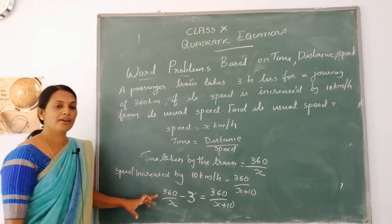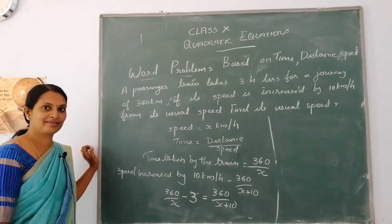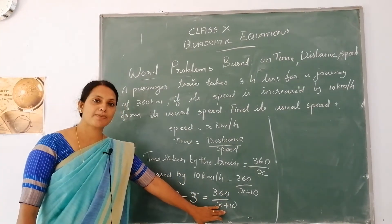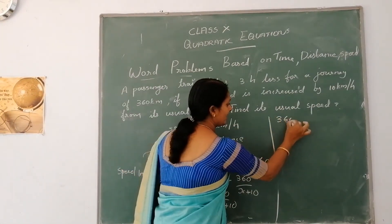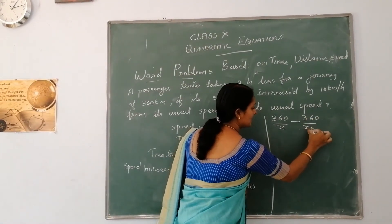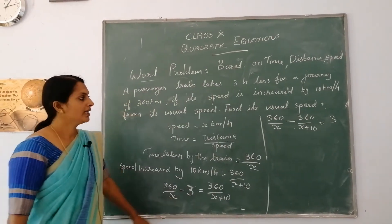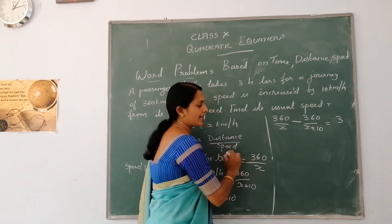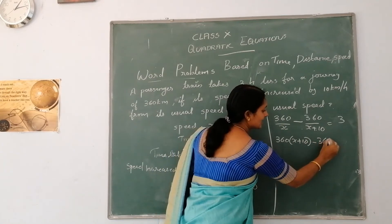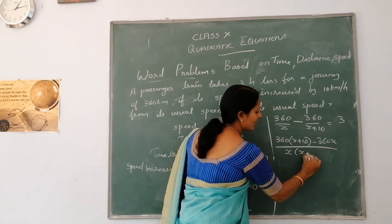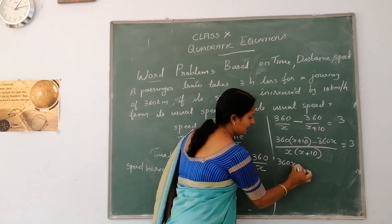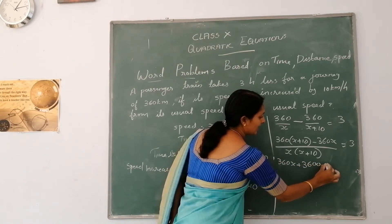We will form a quadratic equation. Transposing minus 3 to RHS and 360 divided by x plus 10 to LHS, we get: 360 divided by x minus 360 divided by x plus 10 equals 3. Taking LCM x into x plus 10, we get 360 into x plus 10 minus 360x, whole divided by x into x plus 10 equals 3.